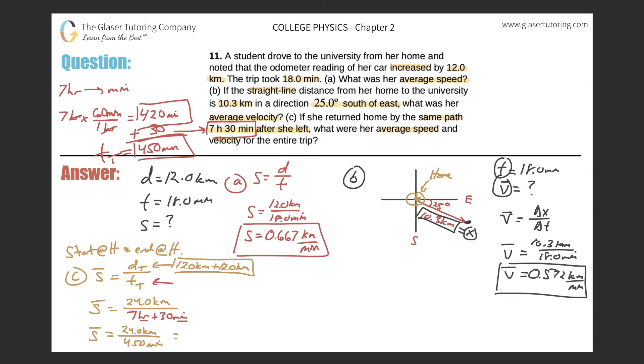So when we do the math, take out the calculator, 24 divided by 450 comes out to a value of 5.3 times 10 to the minus two kilometers per minute. Okay, great. So that is her average speed. I use two sig figs because since we converted them to minutes, we had two sig figs in that value.